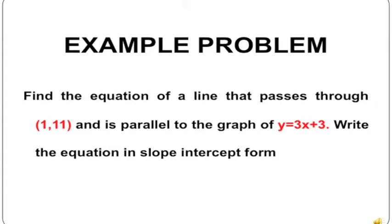The example problem is: let's find the equation of a line that passes through the point (1, 11) and is parallel to the graph of y equals 3x plus 3. We'll write our equation in slope-intercept form.